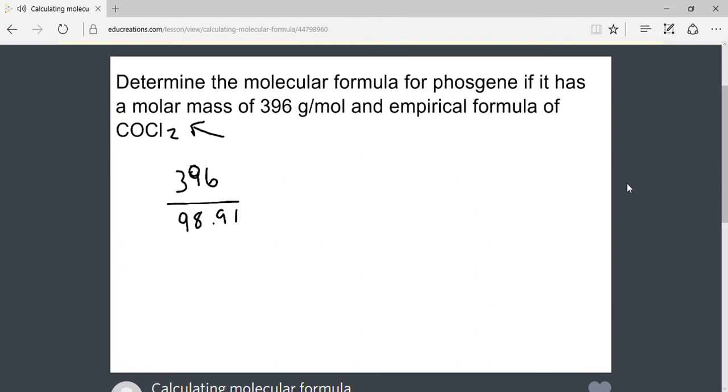By dividing these two values, we reveal the whole number that relates the formulas. The same whole number relates the masses. Dividing 396 by 98.91 gives us the whole number 4. Since 4 relates the two masses, 4 will also relate the two formulas.